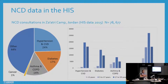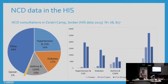This is in contrast to Jordan. This is data from 2015 from Zaatari Camp, where out of nearly half a million consultations, 17% were non-communicable diseases — again not including mental health or injuries. The commonest types of NCDs were mainly hypertension and diabetes, and you can see the age categories as well.